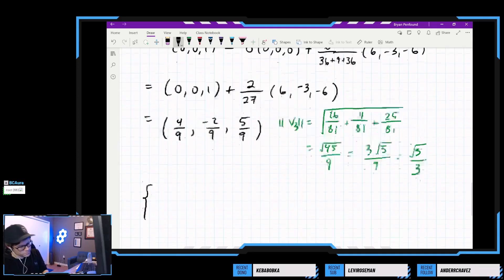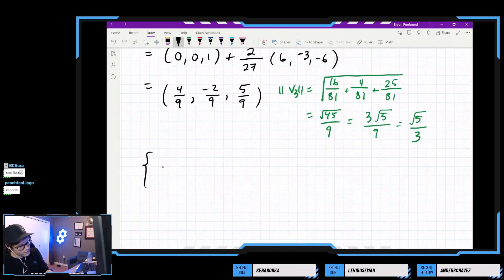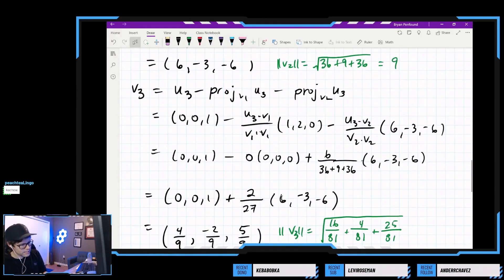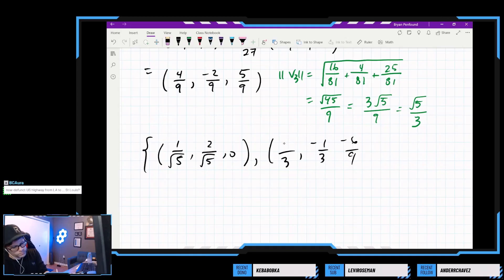We are going to take our v1 and divide by root 5. So we need 1 over root 5, 2 over root 5, and 0. For our second one, we just need to divide everything by 9. So let's take 6, negative 3, negative 6 over 9. These can be simplified. So we can divide by 3. So we need 2 thirds, negative 1 over 3, and negative 2 over 3. So there's vector 2.